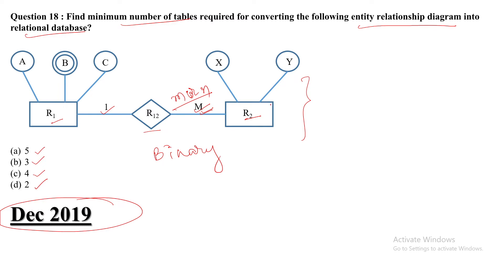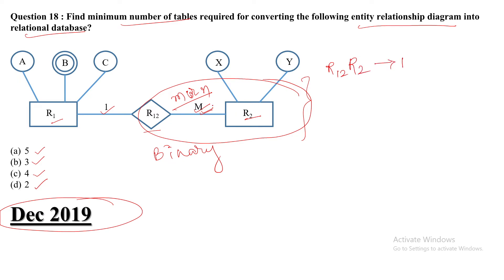Whenever we create the minimum number of tables in an ER model, the relationship is included in the many side. So the first table is R1 combined with R2. The second remaining entity is R1 alone. R1 has three attributes: A, B, and C.